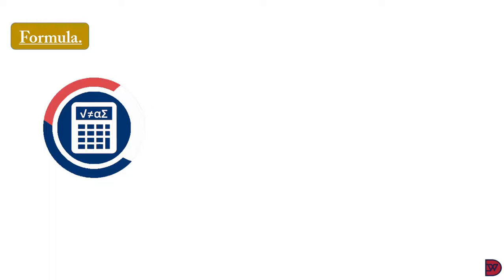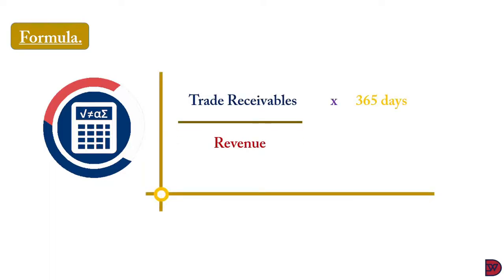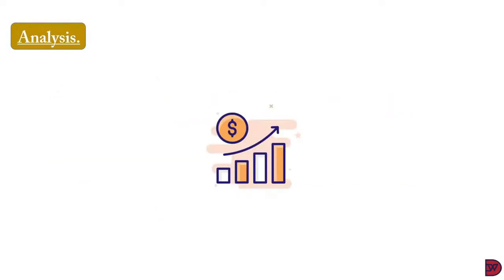The formula for trade receivable collection period is: trade receivables divided by revenue, multiplied by 365 days. Ideally, the business will also have a set standard — mostly 30 days, some 45 days, and a maximum of 60 days. When you make the calculation, you compare it to the period set by the business, or you can compare it to the days set by the industry or your competitors.